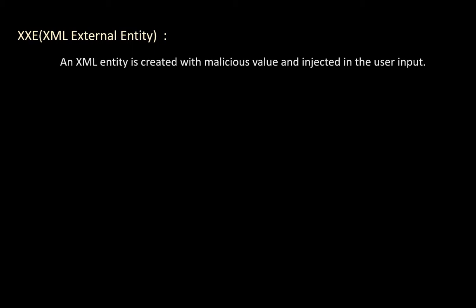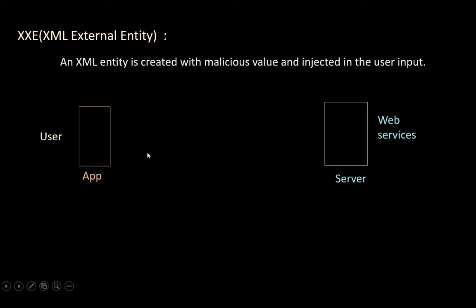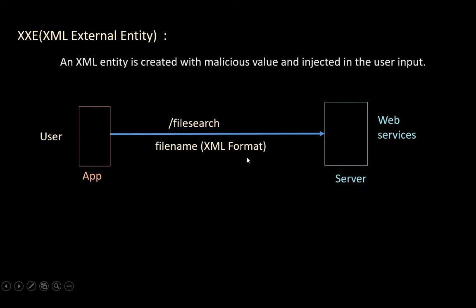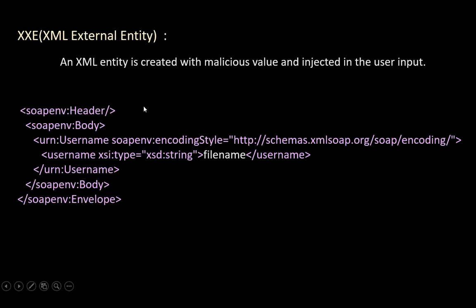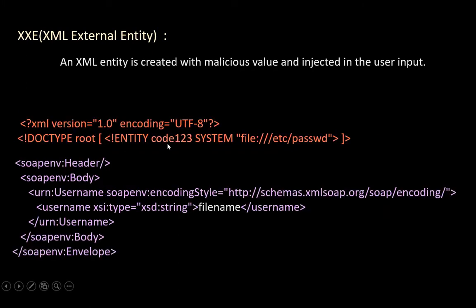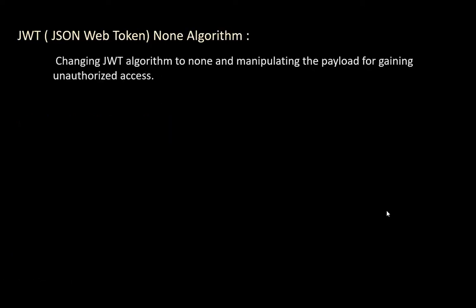XML External Entity (XXE): the attacker creates an XML entity with a malicious value and injects it into the user input. This malicious value can be a command or a location of a file on the target server. When a user searches for a file by sending a request to the file search API with the filename in XML format, the attacker creates an entity — for example, code123 — with the value of the location of /etc/passwd. The filename is replaced by this entity, and once sent to the server, the attacker receives the content of the passwd file, which is the list of all users.